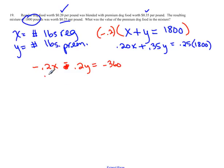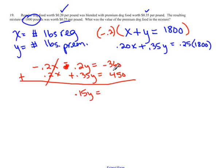Bring down the next equation, 0.2x, plus 0.35y, and when you multiply 0.25 times 1800, you get 450. Okay, I'm going to use addition, and my x's will eliminate. When I combine negative 0.2y, plus 0.35y, I get a positive 0.15y. When I collect these like terms, negative 360 plus 450, I get positive 90. Divide by 0.15, and you get y is 600.